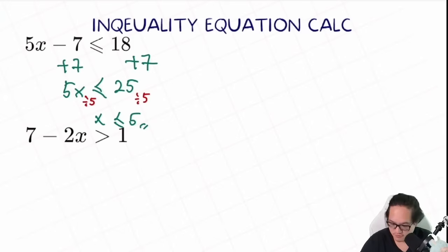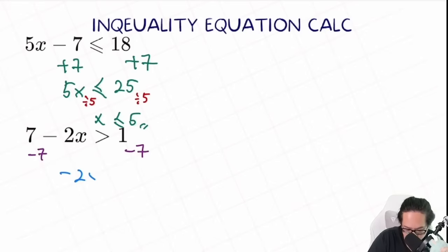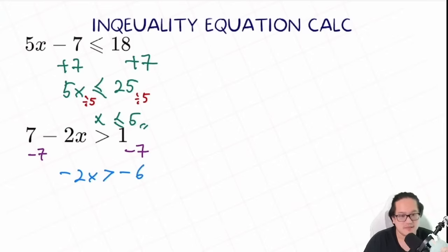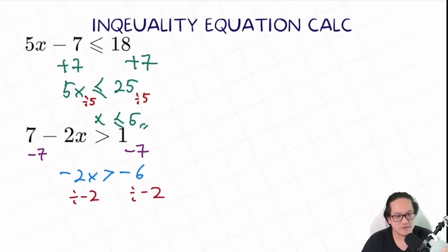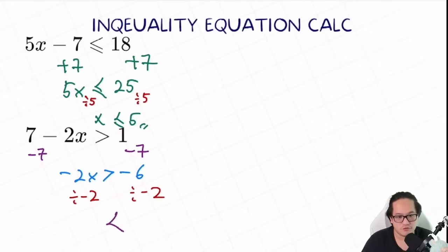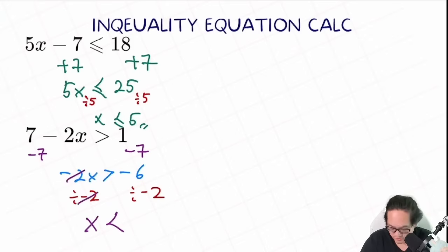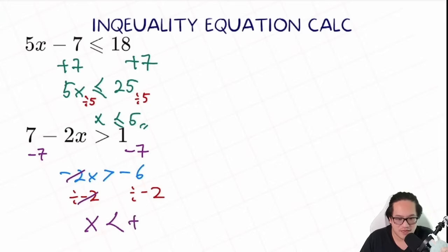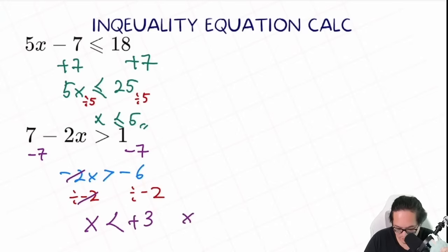Let's try: 7 minus 2x bigger than 1. We can minus 7 on both sides, giving us negative 2x larger than 1 minus 7, equal to negative 6. Now let's isolate x — we divide by negative 2 on both sides. Make sure every time you divide or multiply by a negative number, flip the sign first so you don't forget. Negative 2 on the left cancels out, leaving x. Negative 6 divided by negative 2 — two negatives make a positive — and 6 divided by 2 is 3. So the final answer is x is smaller than 3.